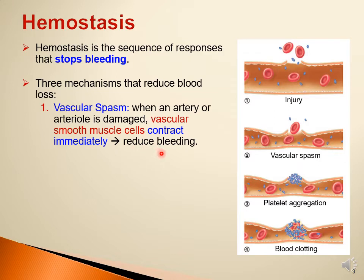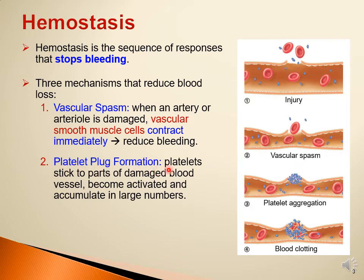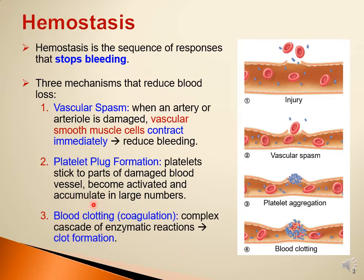The second mechanism is platelet plug formation. Platelets stick to parts of the damaged blood vessel, become activated, release the contents of their granules, and this leads to accumulation of more platelets — a very good example of a positive feedback mechanism. The third mechanism is blood clotting or coagulation, a complex cascade of enzymatic reactions involving different clotting factors that leads to fibrin mesh formation and finally clot formation.